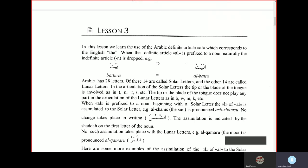Whereas for the lunar letters, no such assimilation takes place. For example, al-kamar, al-kamaru, the moon, is pronounced as al-kamaru. It is not pronounced as ak-kamaru. No, it is pronounced as al-kamaru.